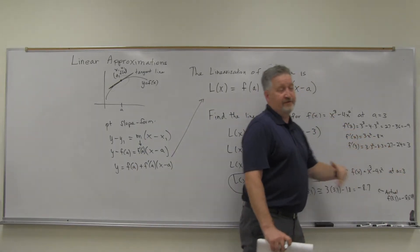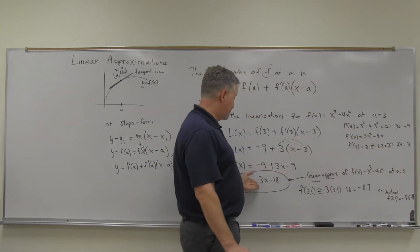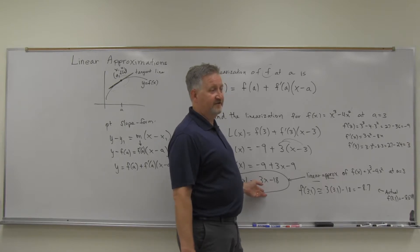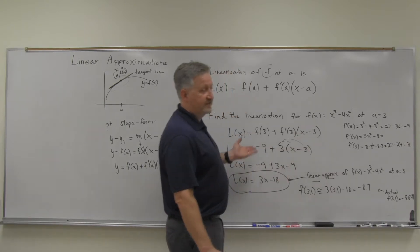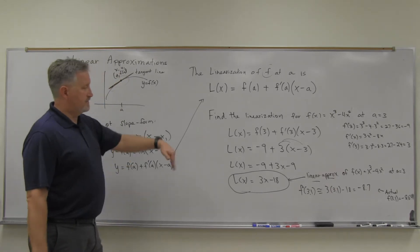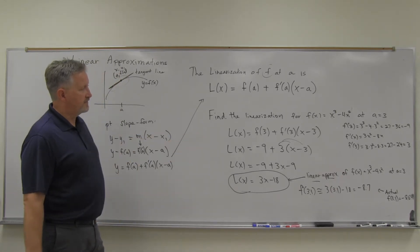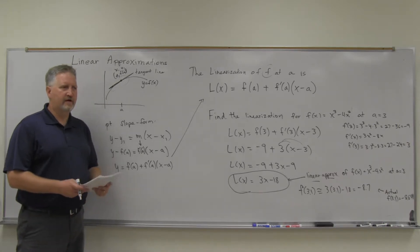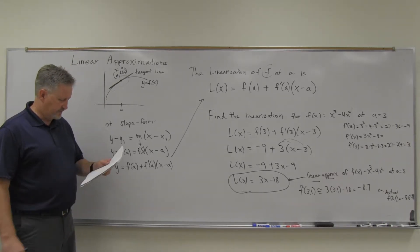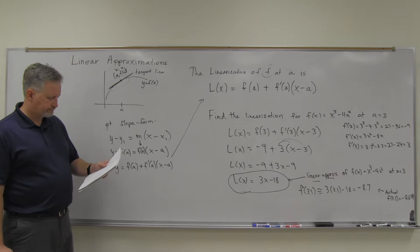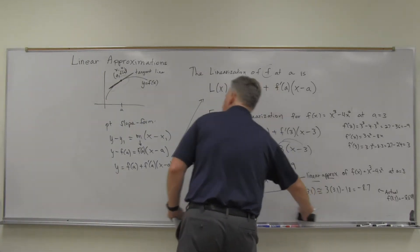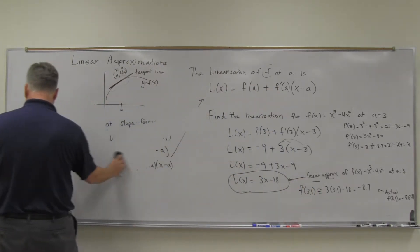But if we moved to x equals 10, this would not give us a good approximation of the function value at 10, because the linearization is only valid near a equals 3. Let's do one more and then a different type.